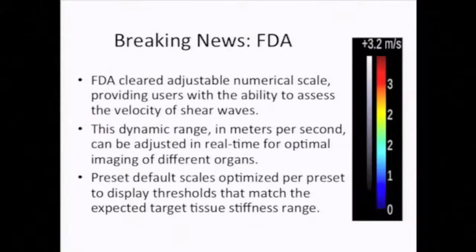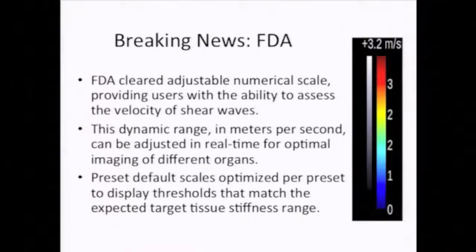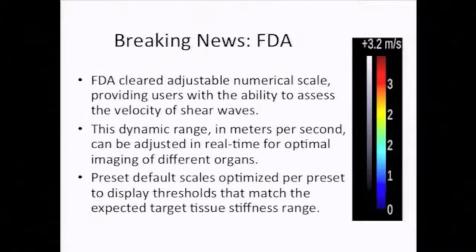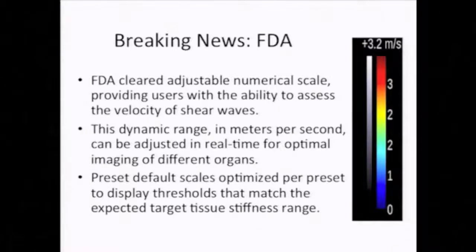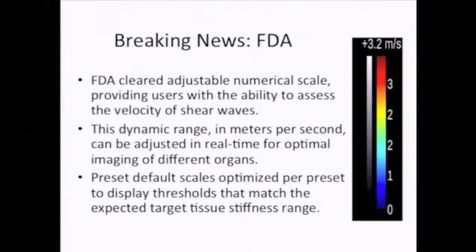There has recently been a change in the FDA approval status of the Explorer. For clinical non-research units in the United States, the color scale now comes preset such that it's optimized for the expected range of velocities per organ. In the liver, it's optimized to show the range between normal liver and cirrhosis, permitting correlation with the adjacent color scale to obtain a visual assessment of the degree of fibrosis.